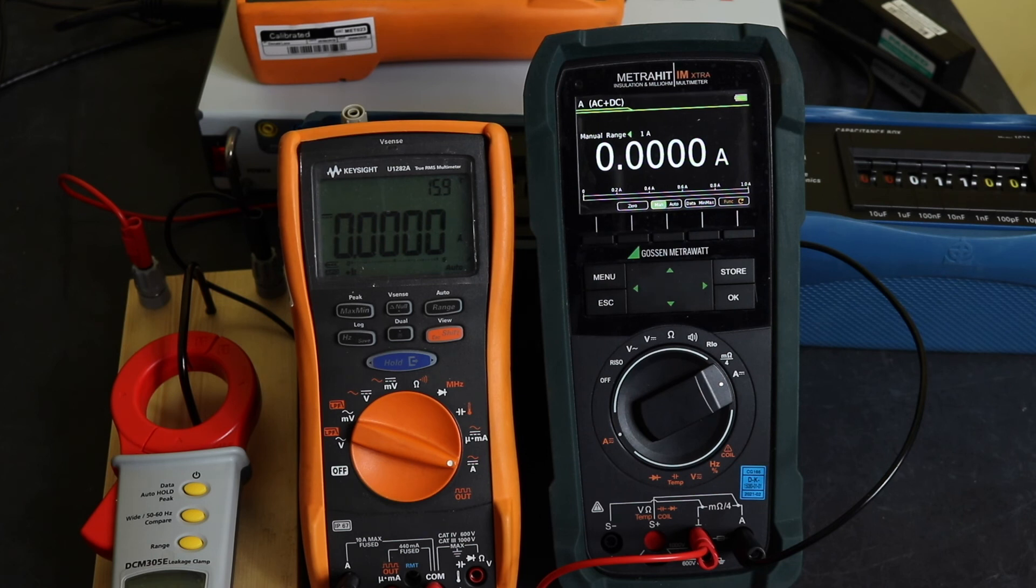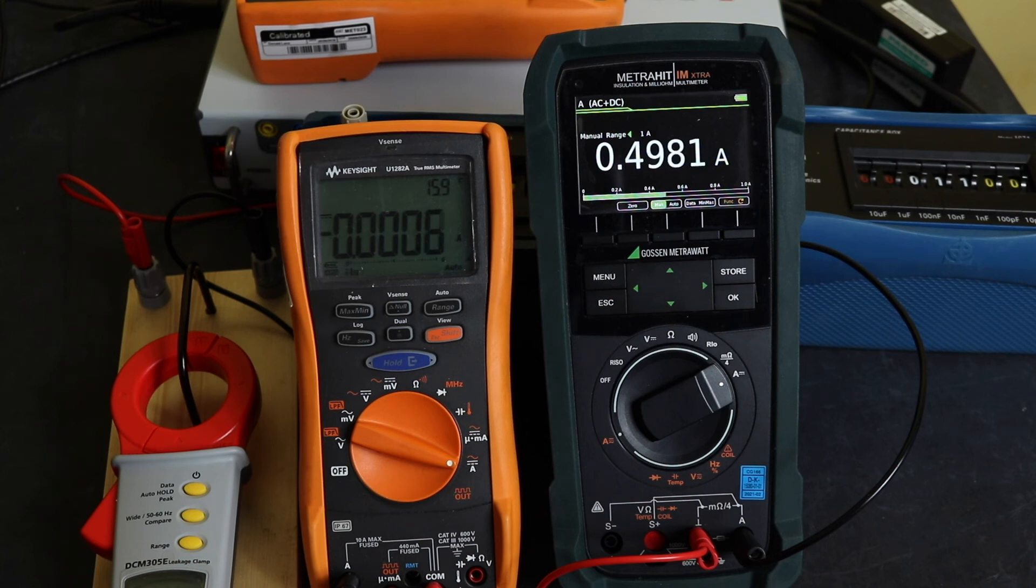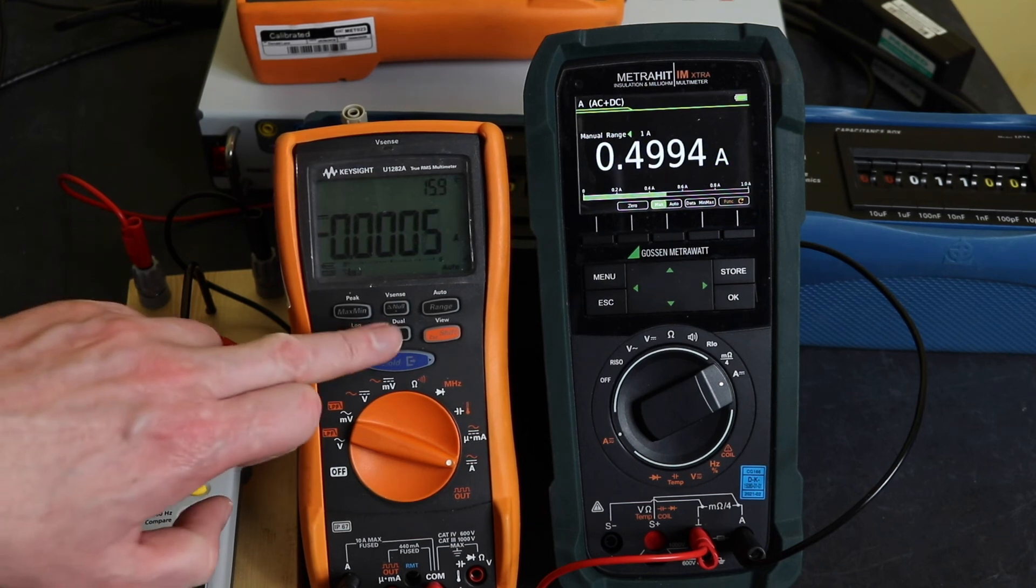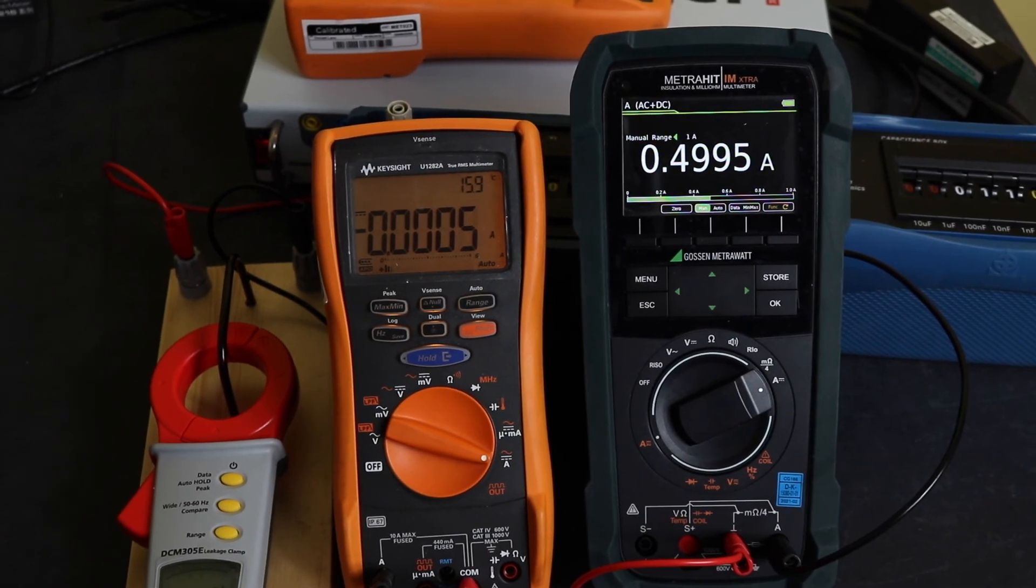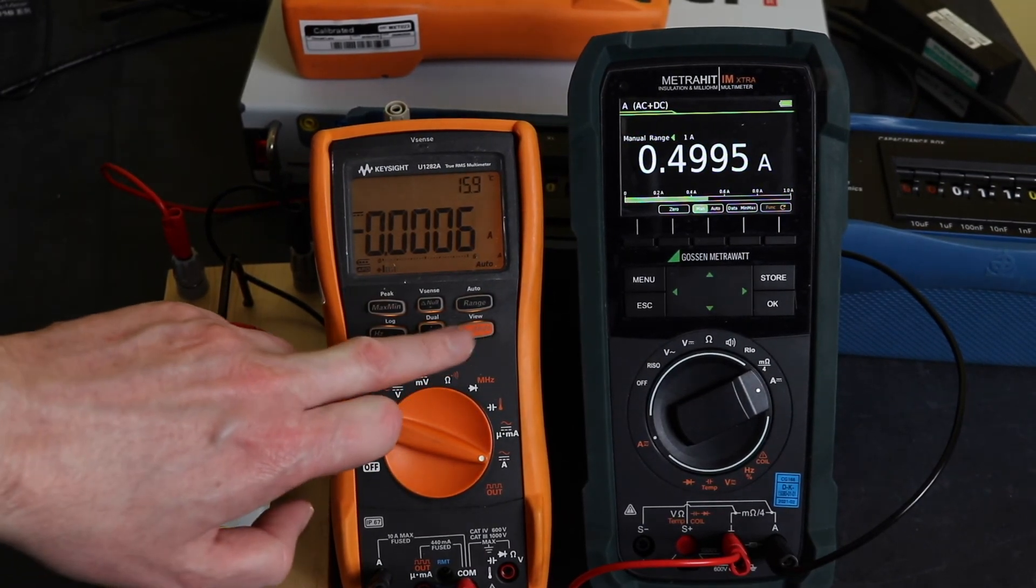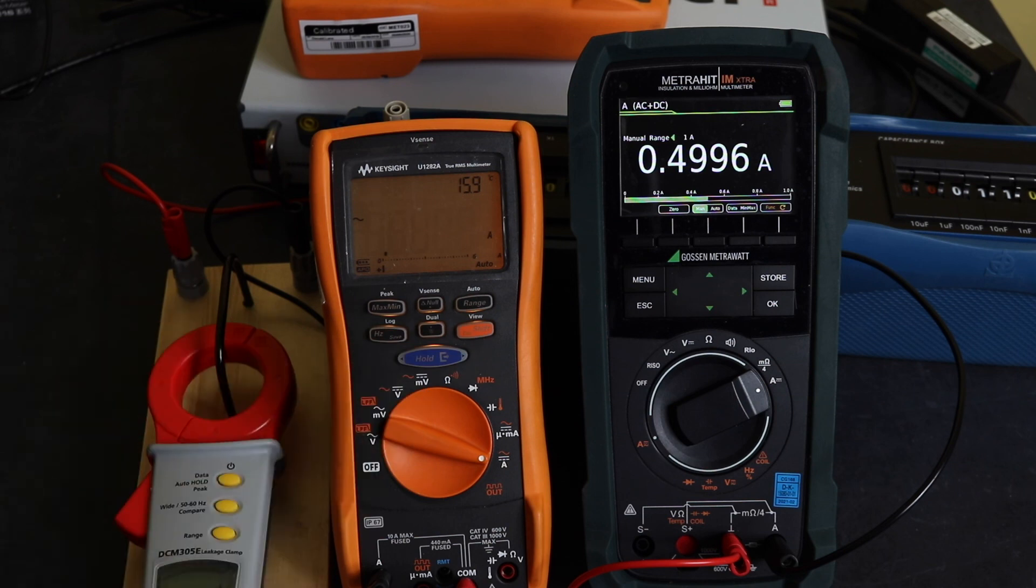So that's on 0.5. Switch him on and put the light back on. So you can see there. Oh, it's DC, isn't it? You need to put AC on. There we go. So 497.5, 499.6, and I'm reading 506.1 on the DCM305E.